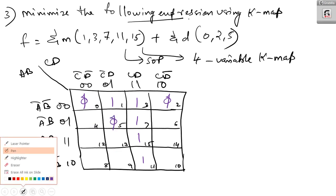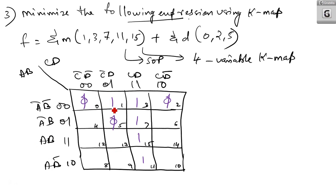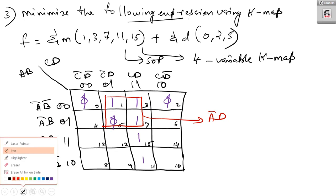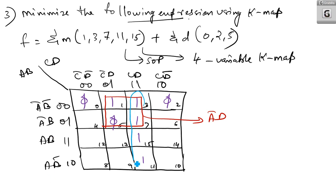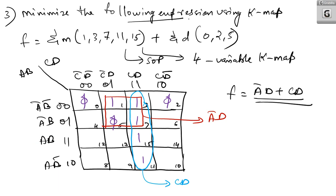Simplifying: we can get a quad — the first quad has Ā common in the rows and D common in the columns, giving ĀD. The second quad gives CD. Therefore the most simplified SOP expression is F = ĀD + CD.